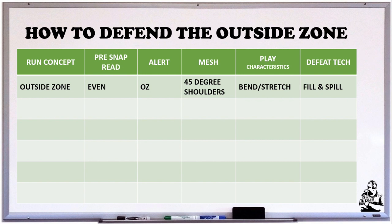First, our run concept is outside zone. How do we determine that by a pre-snap read? 'Even' simply means that the running back is in the same line as the quarterback. Our alert to our defense is OZ — that stands for outside zone. I talk about the pre-snap read and the alert in a previous episode.